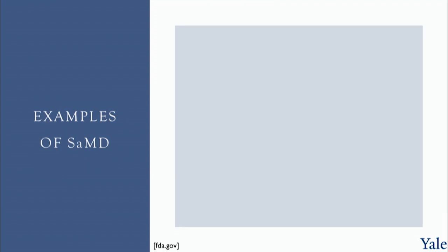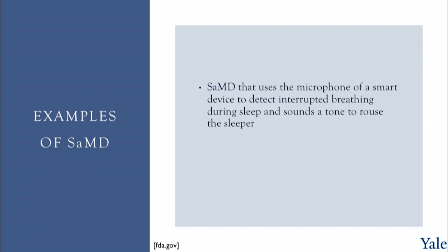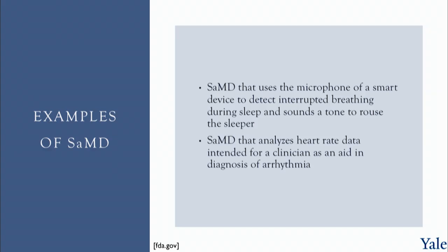Software as a Medical Device is software designed to run on general purpose hardware. The FDA gives a couple of examples: one is software that uses a smartphone microphone to detect interrupted breathing during sleep and sound a tone to arouse the sleeper — the hardware is just the phone, and the medical device is the software. Another example is SaMD that analyzes heart rate data intended for a clinician as an aid in diagnosing arrhythmias, running on a general purpose PC or phone.